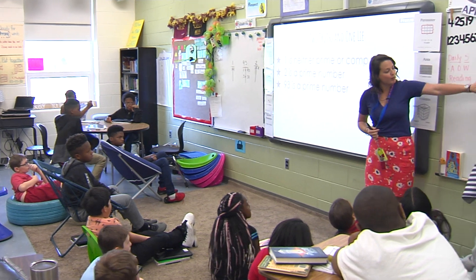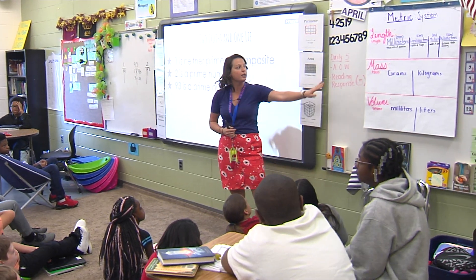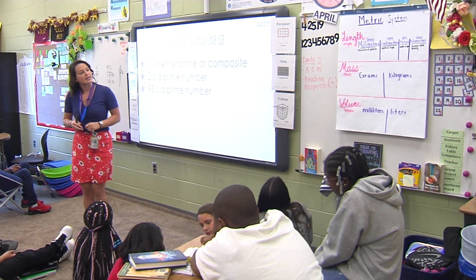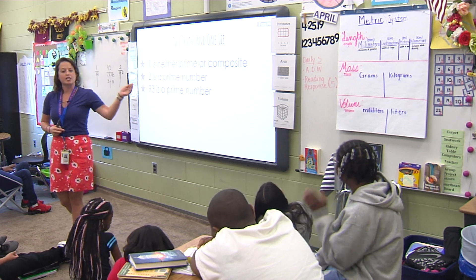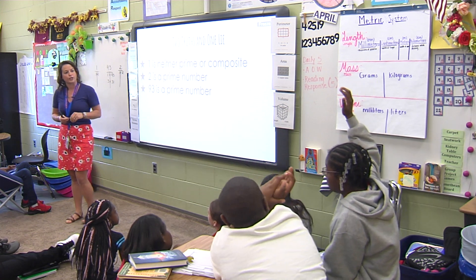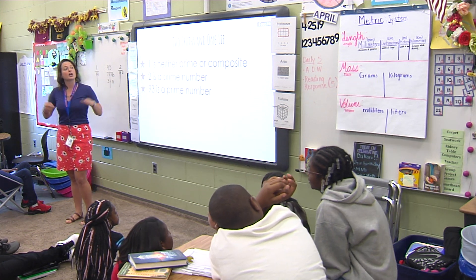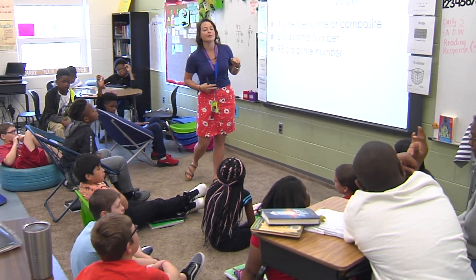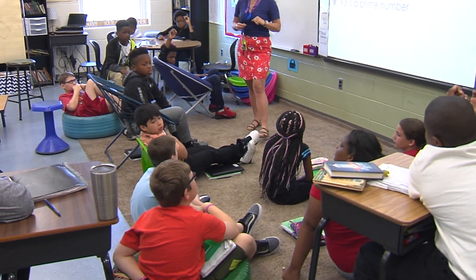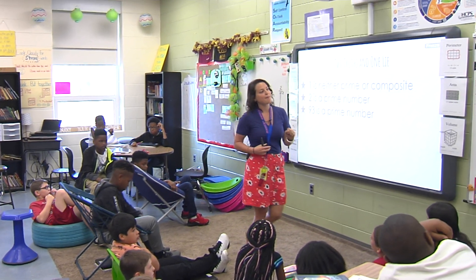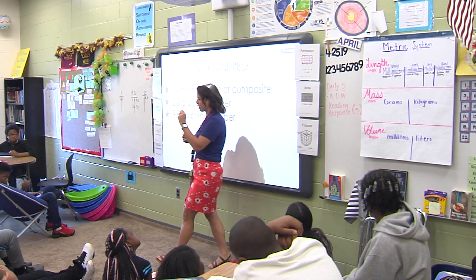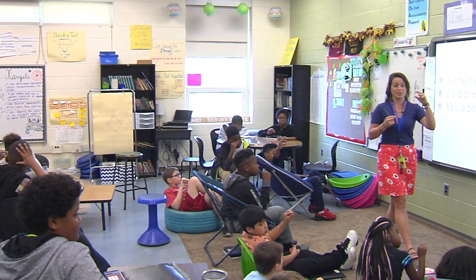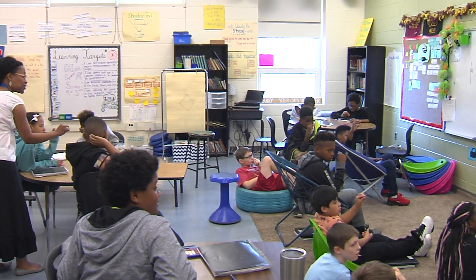Yesterday when we talked about length — remember we said we'll get to mass and volume later in this unit. Length is the distance between two points. We talked about millimeters, centimeters, meters, and kilometers. Millimeters are the smallest — about the thickness of a quarter. Can you show me that with your finger? It's about the thickness of a quarter. Centimeters are a little bit bigger — about the width of your finger. Hold your finger up; it's about the width of your finger.